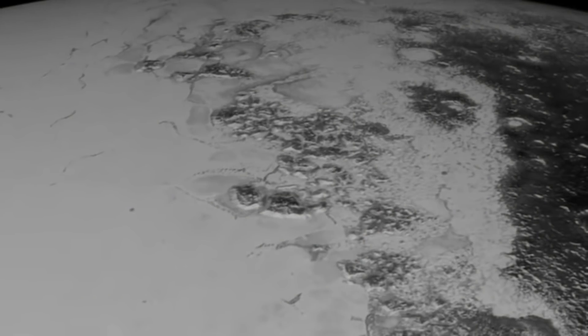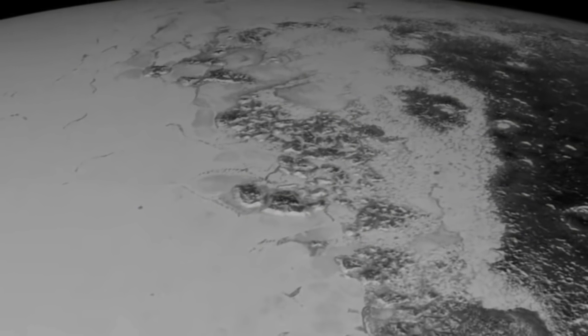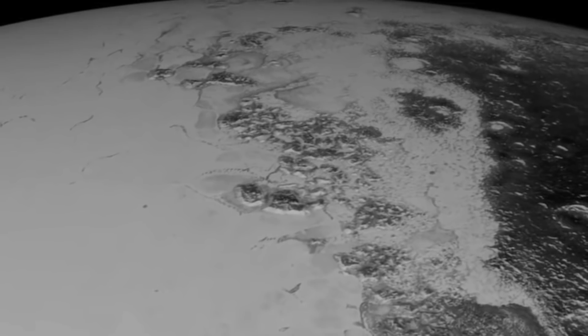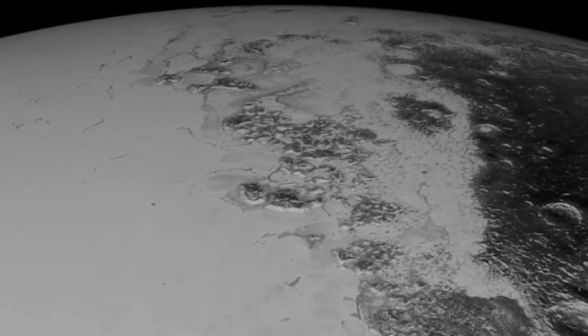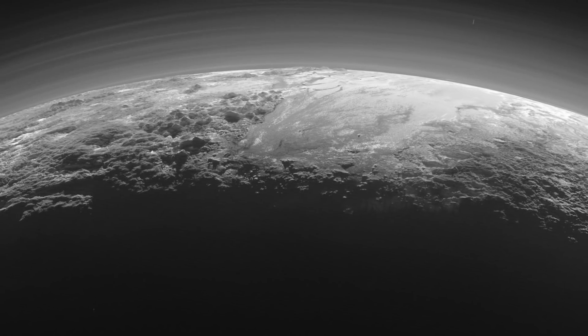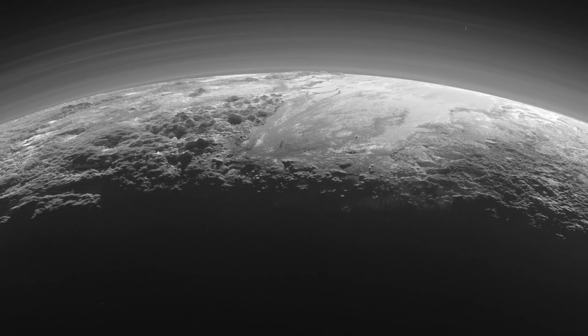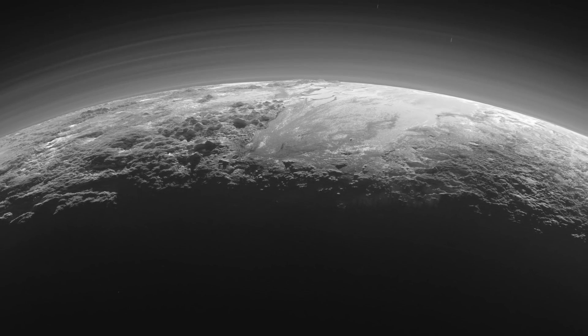NASA's New Horizons mission is ongoing, meant to study Pluto and the Kuiper Belt. Currently, the most recent probe sent to analyze Pluto is still processing the information it gathered and sending it back to Earth. Among the various pieces of information regarding the dwarf planet lies the possibility for Pluto to possess frozen lakes formed of liquid nitrogen.